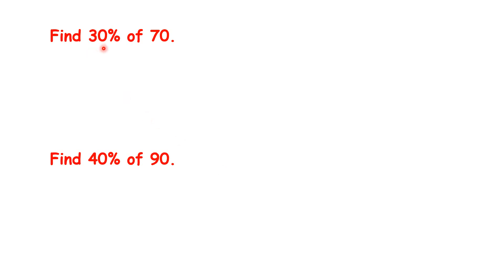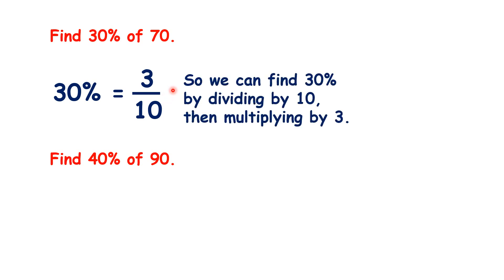So pause the video and see if you can find 30% of 70 and 40% of 90. 30% means 30 over 100, so we can simplify that to 3 over 10, or 3 tenths. So we can find 30% by dividing by 10, then multiplying by 3. So that gives us 21.